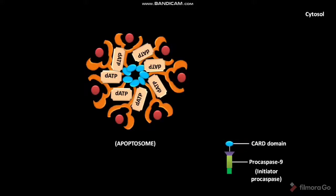Now, let us see how the inactive Procaspase 9 molecules are recruited to the apoptosome.